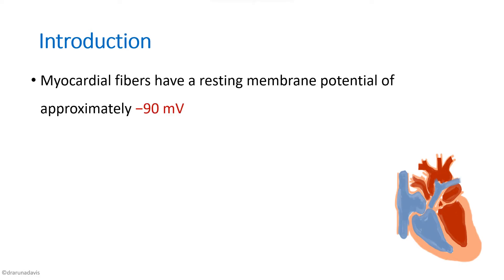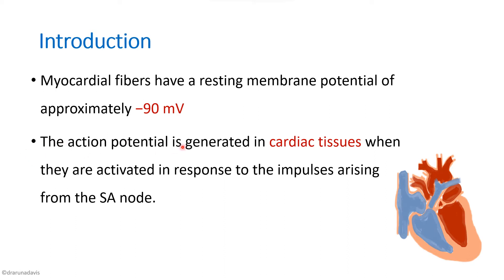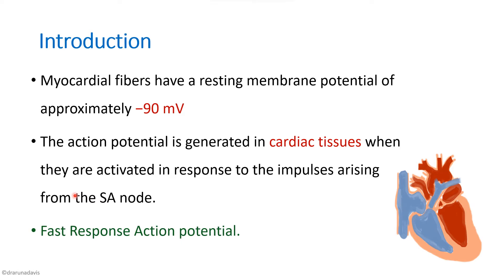In the introduction you can write that the normal resting membrane potential of myocardial fibers is minus 90 millivolts. The cardiac action potential is generated in the cardiac tissues when they are activated in response to the impulse arising from the SA node. When the SA node fires, that impulse is transmitted to the cardiac tissues, which in turn produce an action potential.